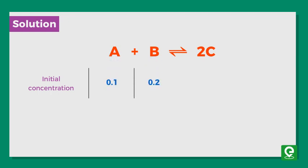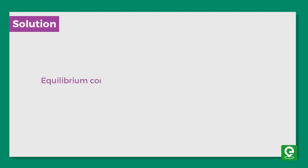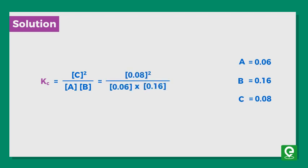The given reaction is A plus B gives 2C reversibly. Initial concentrations are A = 0.1 M, B = 0.2 M, C = 0. Equilibrium concentration of A is 0.06, B is 0.16, and C is 0.08. The formula for equilibrium constant K equals square of concentration of C divided by concentration of A into concentration of B. Substituting the values, we get K equals 0.6667.